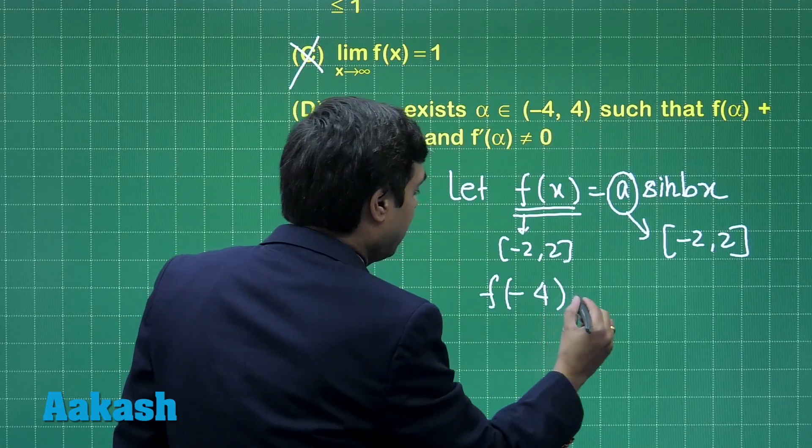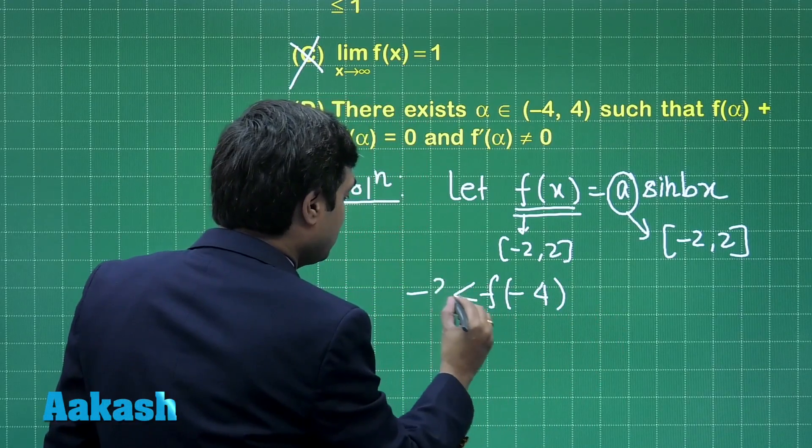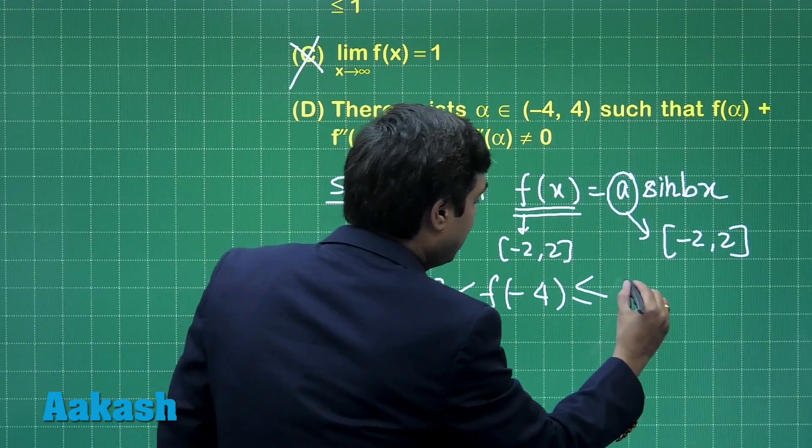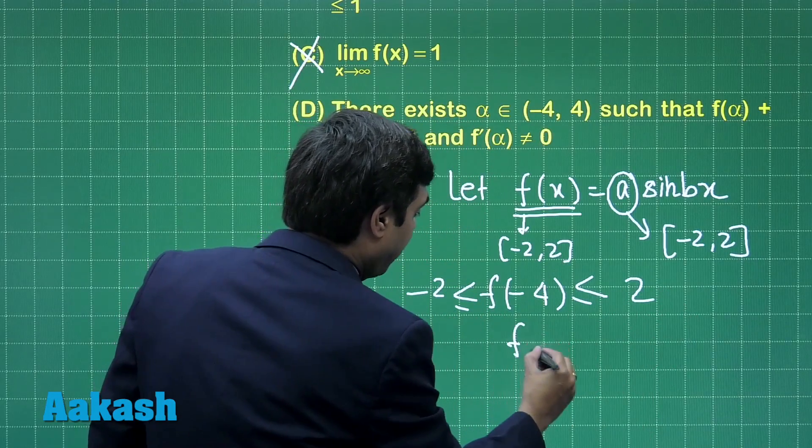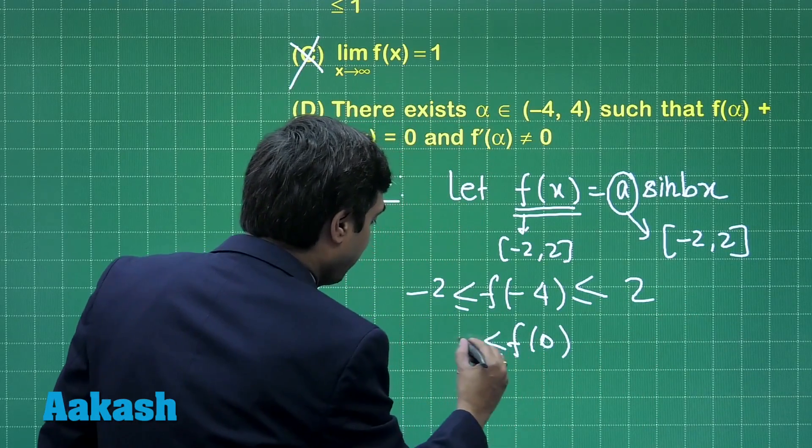f of minus 4 is lying between minus 2 and 2, f of 0 is also lying between minus 2 and 2.